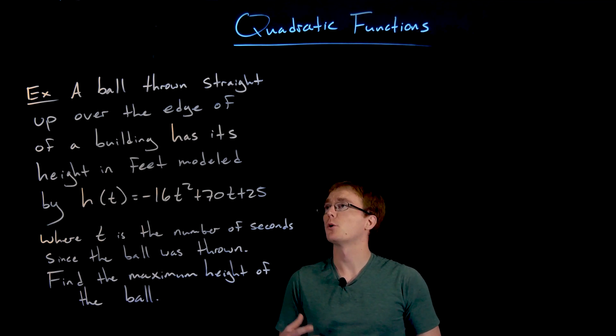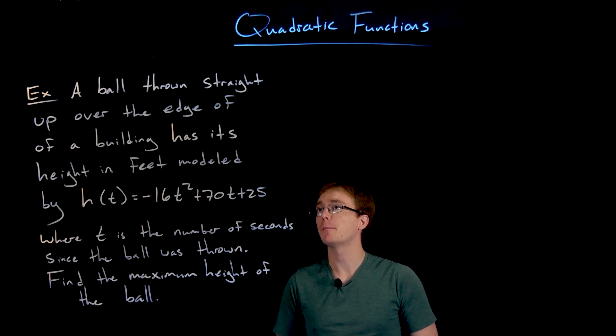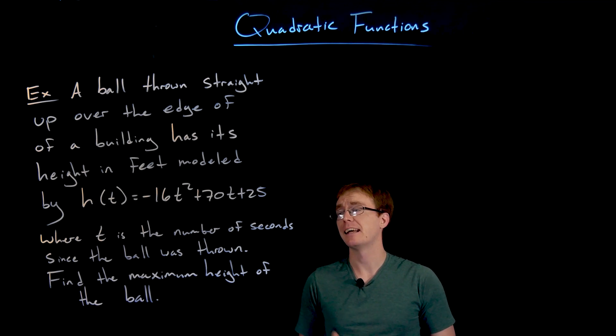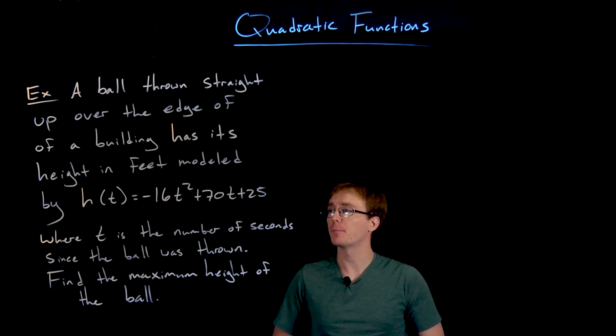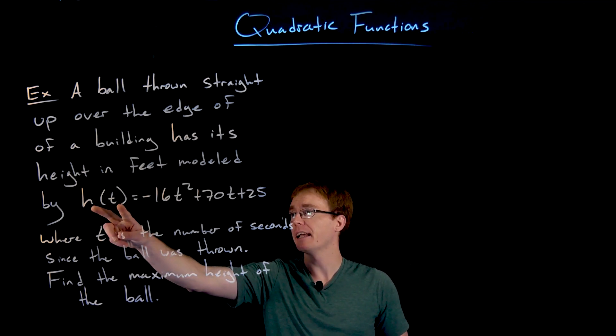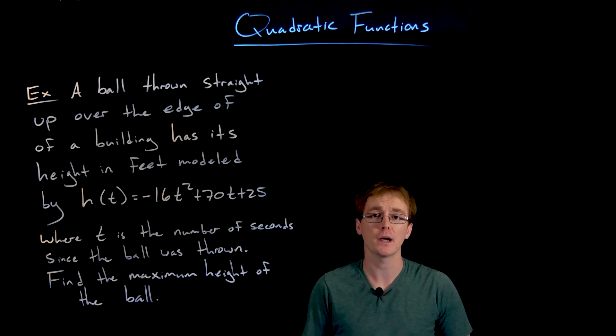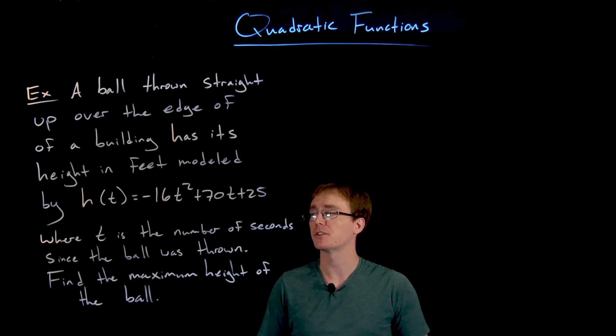Hello everyone. In this example we are told that a ball is thrown straight up over the edge of a building and it has its height in feet modeled by the quadratic function h(t) = -16t² + 70t + 25.